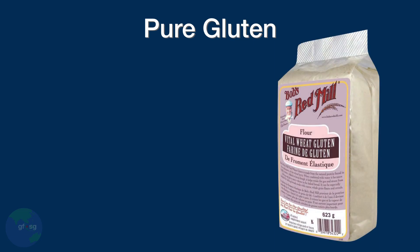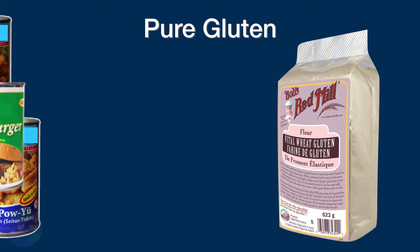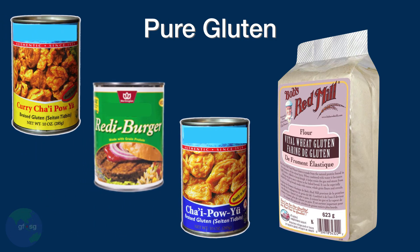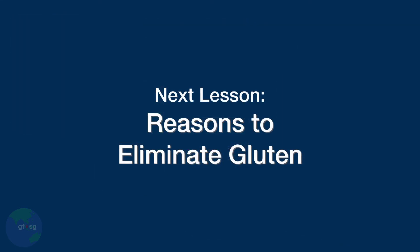It is possible to find pure gluten, made from separating the wheat starch from the gluten protein. Vital wheat gluten is often added to bread recipes to improve the texture and elasticity of the dough. Pure gluten can also be used to make a vegetarian meat substitute known as seitan. Gluten is a common and useful ingredient in the kitchen, but it can be the cause of some health problems.